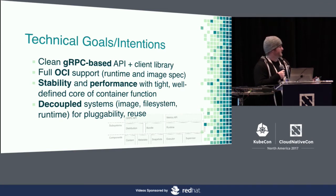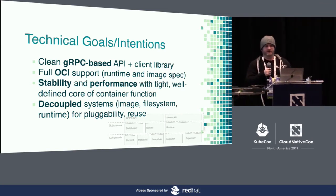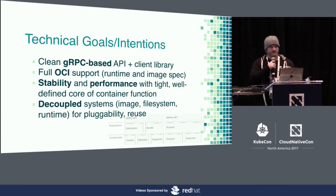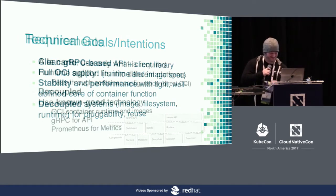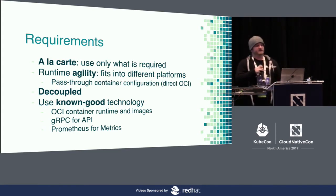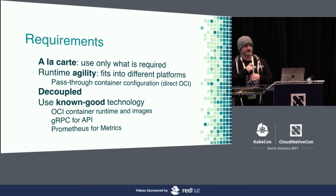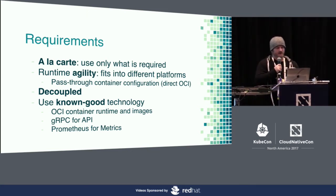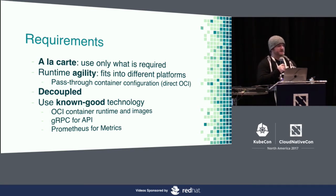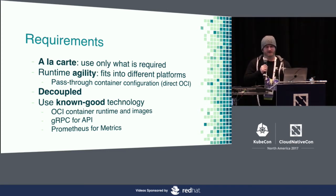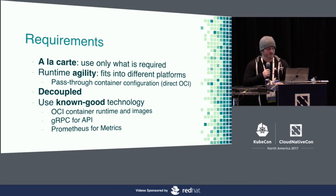ContainerD is also highly decoupled — made up of several microservices you use together. The other key design principle is an à la carte design: if you don't like how we do image storage, push and pull, or anything else, you don't have to use it. You can use only the parts of ContainerD you actually want, and disable the parts you don't need. We also focused on using well-known technology from the CNCF and Linux Foundation — OCI container runtime and images, gRPC heavily, and Prometheus for exporting metrics.